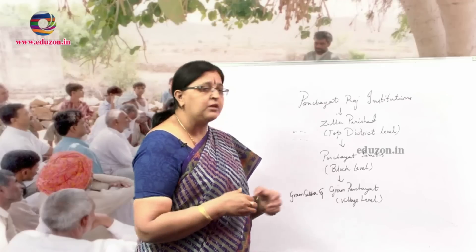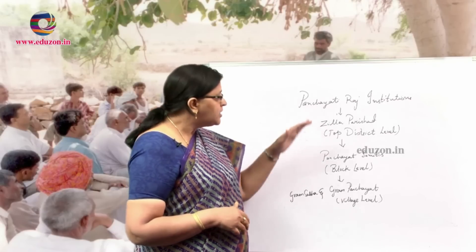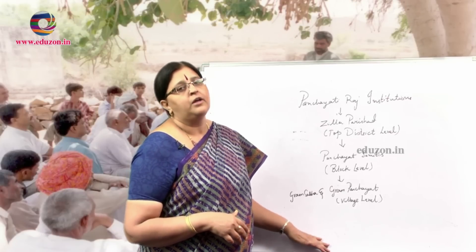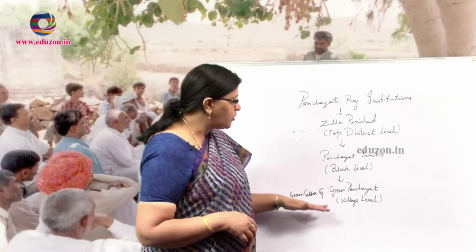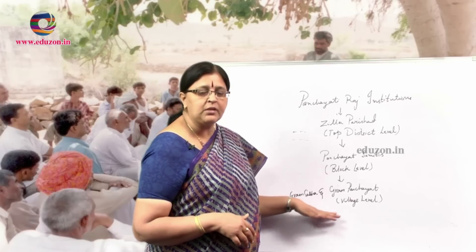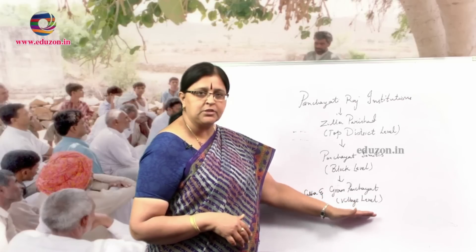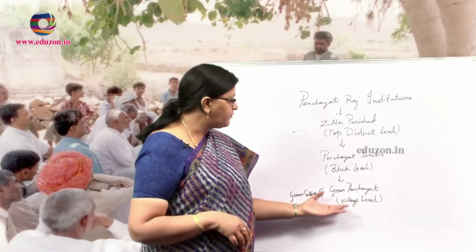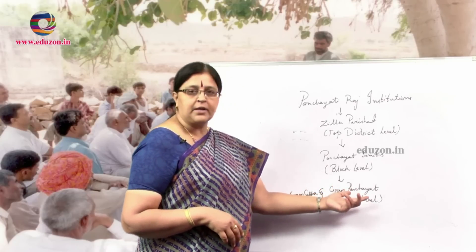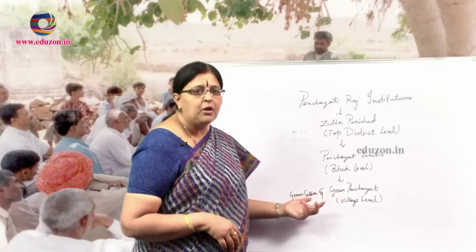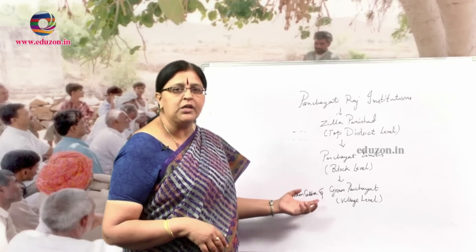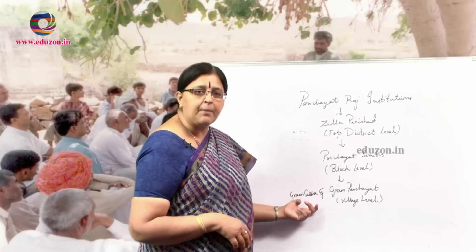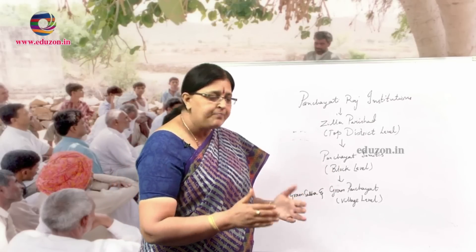It maintains records of land and also maintains records of births and deaths. These are the functions which take place at the local levels. First, we are going to discuss about the Panchayati Raj system functioning at the village level, which consists of two: Gram Sabha and Gram Panchayat. What is Gram Sabha? Gram means village.